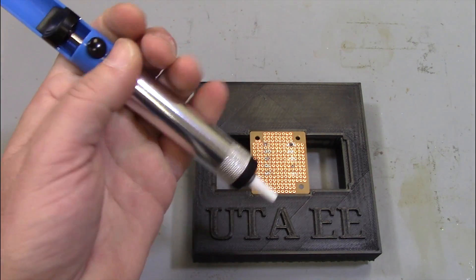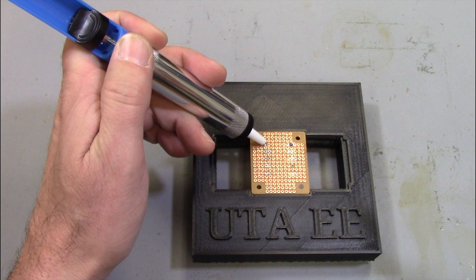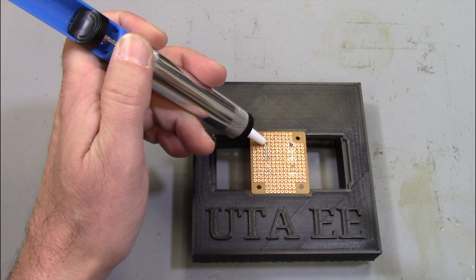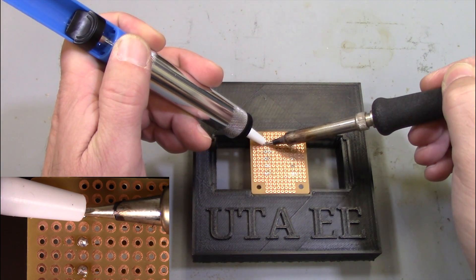Engage the pump and place it on one side of the solder joint. Place your thumb or finger on the trigger. Heat the joint with the soldering iron and when the solder melts, press the trigger.